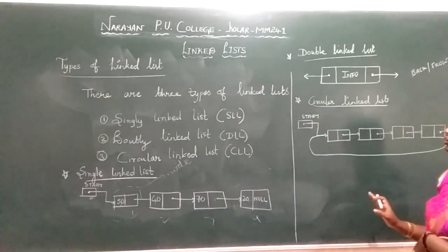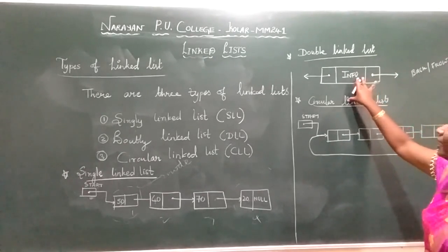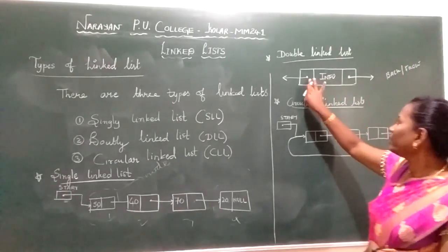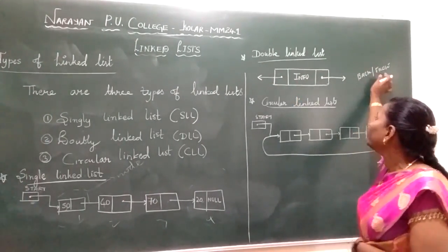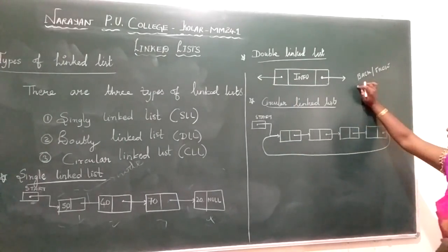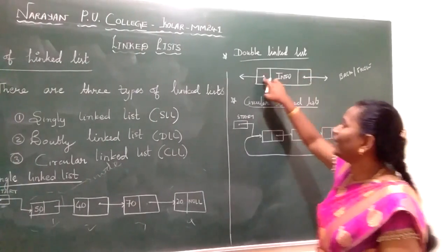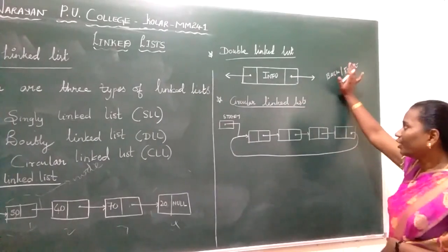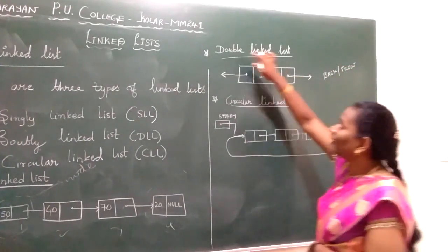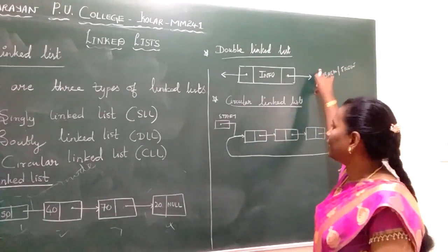Next we will see doubly linked list. In doubly linked list, each node has links on both sides — we can traverse back and forth. The linking is done in two ways: to the back and forward, we can link with other nodes. Because of this two-way linkage, we call it a doubly linked list — it has two link fields.